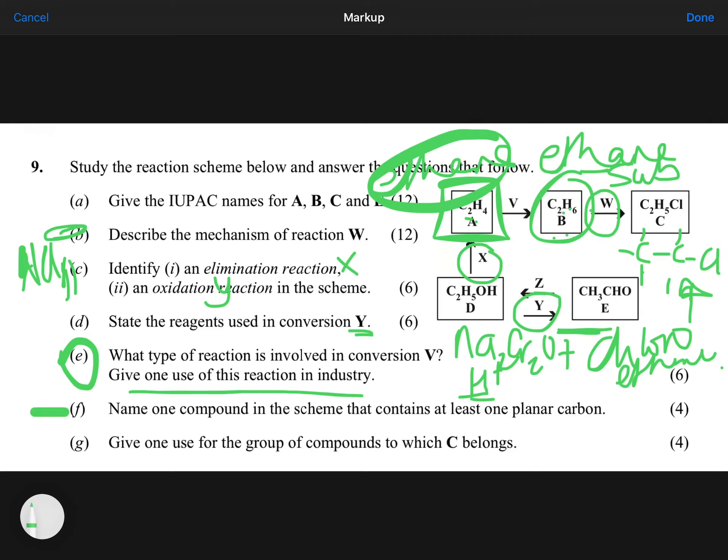F then says, name one compound of the scheme that contains at least one planar carbon. Now, you'll have them drawn out, so you'll be able to see the carbons that have a double bond. So ethene has two planars, so at least one. So ethene is the answer. So you could say A or E. The ethanol also has one planar carbon there. And then giving a use for compounds which C belongs to. Well, chloroalkanes. What is our use of chloroalkanes? They're good organic solvents. So solvents for removing oil, solvents for removing grease, solvents for dry cleaning clothes, paint stripper, that sort of thing.